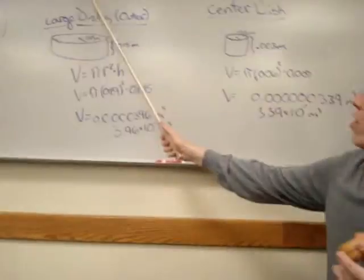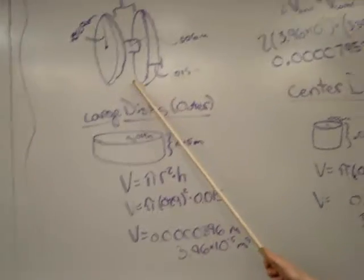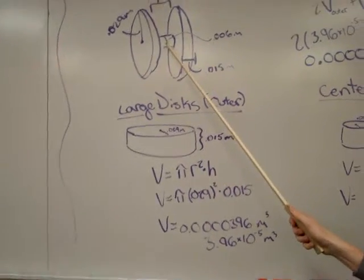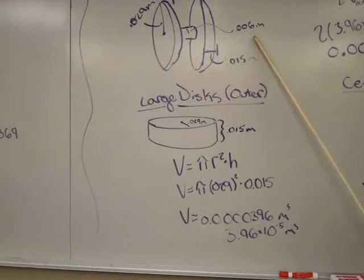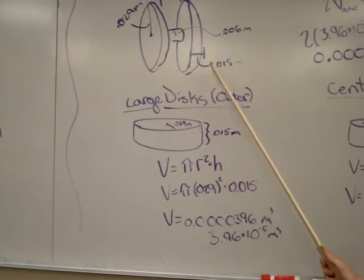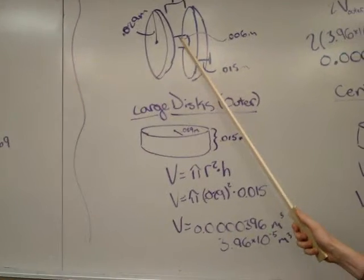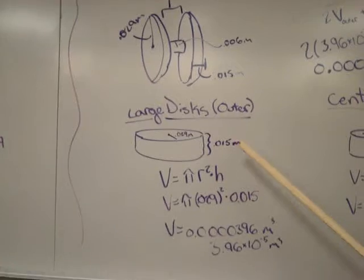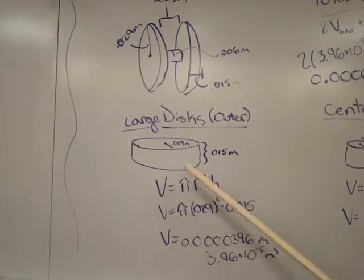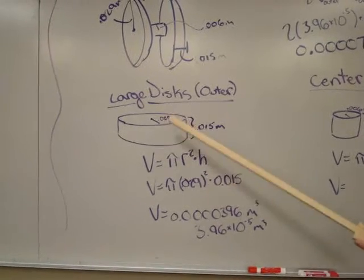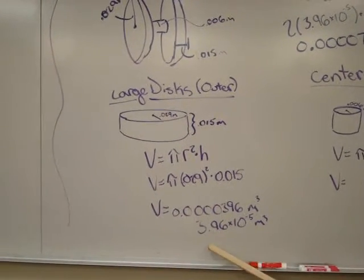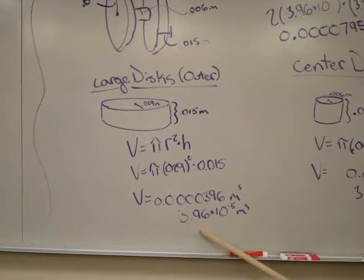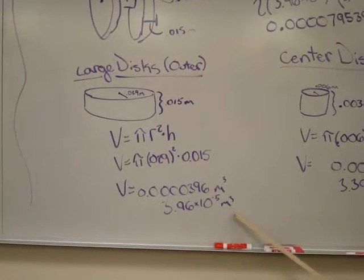As you can see here, these are the calculations which we have for the yo-yo itself. The radius of the outer disc is 0.029 meters. The radius of the inner disc is 0.006 meters. The width of the outer disc is 0.015 meters and the width of the inner disc is 0.003 meters. Using this, we found the volume of the large disc first. Volume of a cylinder equals pi r squared times the height of the cylinder. Through the calculations, we ended up with the volume of the large cylinder is 3.96 times 10 to the negative 5th meters cubed.